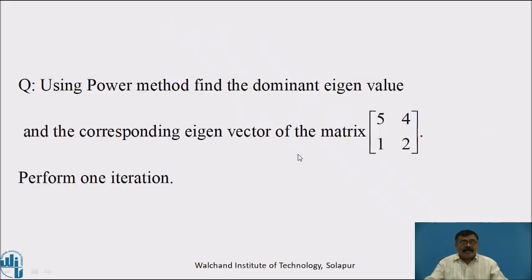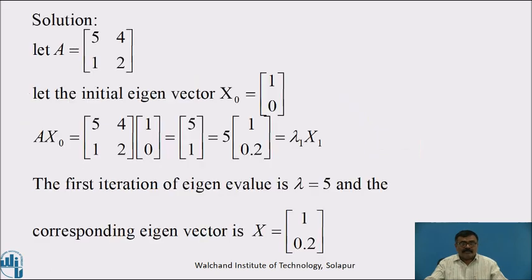Pause the video and answer the question. Using the power method, find the dominant eigenvalue and the corresponding eigenvector of the matrix. The matrix is [5, 4; 1, 2]. Perform one iteration. Solution: Let A be equal to the given square matrix, that is [5, 4; 1, 2].